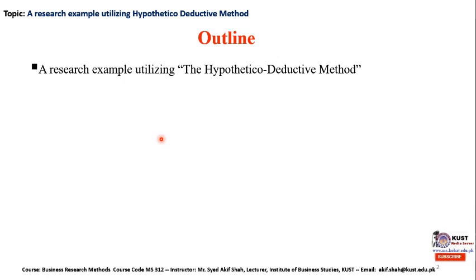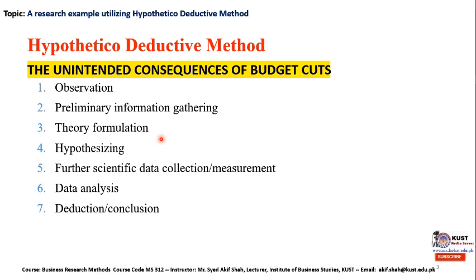The outline of this lecture comprises of a research example utilizing the hypothetical deductive method. The topic of this research work, highlighted in yellow before you, is: the unintended consequences of budget cuts. Before discussing the different steps of the hypothetical deductive method for this research, we need to understand the research topic so that the upcoming steps may become clear.